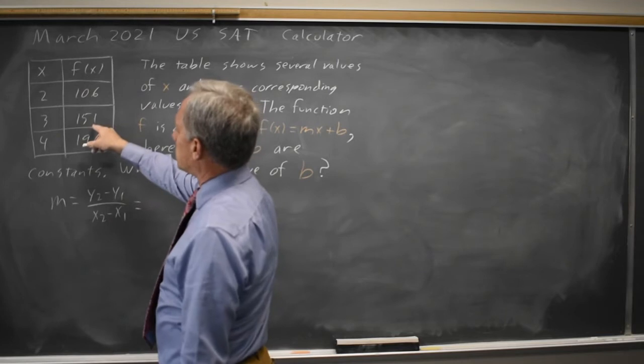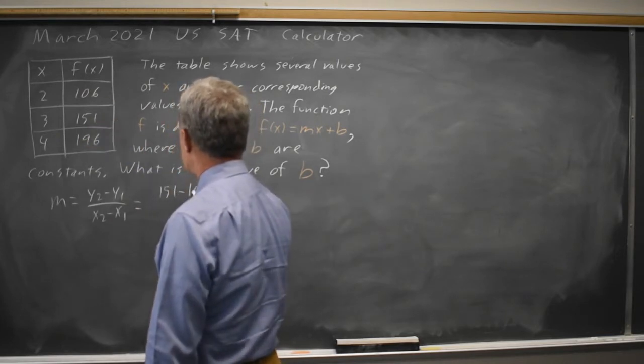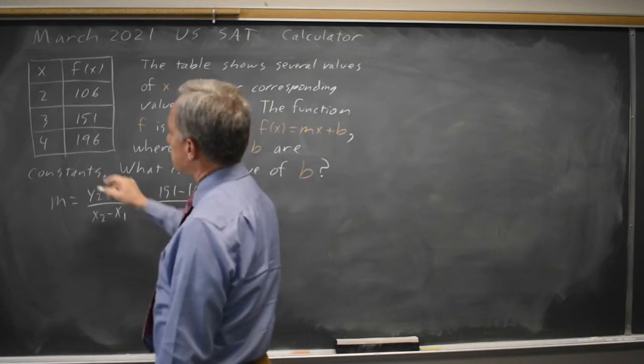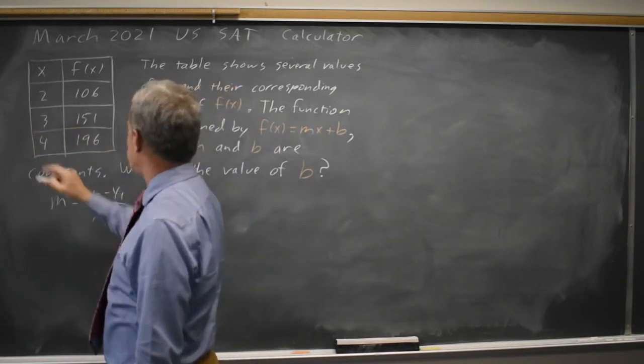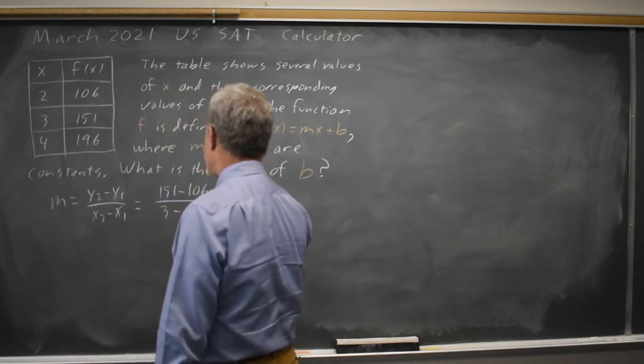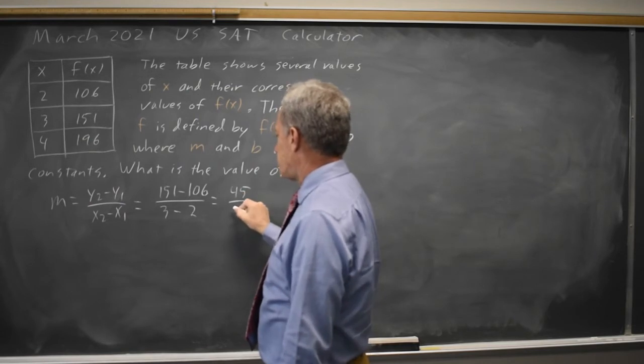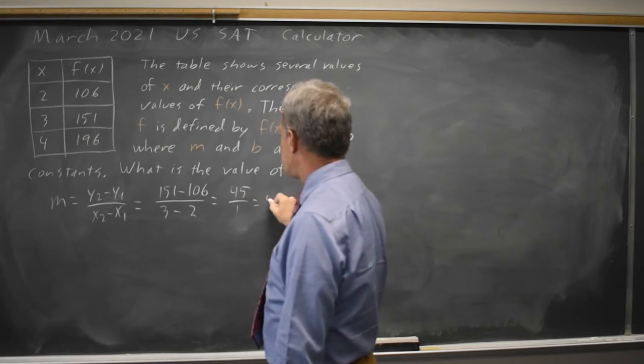Two y values are 151 and 106. The x values are in the same order, so x that goes with 151 first and x that goes with 106 second. 151 minus 106 is 45, 3 minus 2 is 1, so the slope is 45.